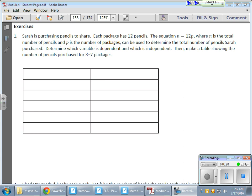For example, we have Sarah, and she's purchasing pencils to share. In each package there are 12 pencils. Now, the packages themselves are the actual independent variable because the number of total pencils that she's going to give out greatly depends on how many packages she has. Therefore, the package is the independent variable.